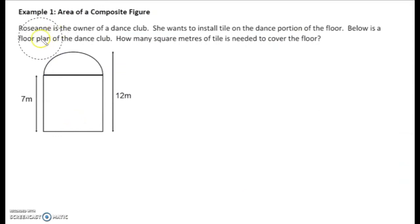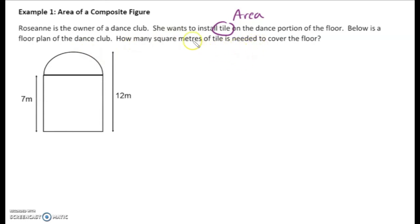Example one: area of a composite figure. Roseanne is the owner of a dance club. She wants to install tile — as soon as we see tile, we know we're covering the area of the floor. The floor plan shows the dance portion. How many square meters of tile is needed to cover the floor? The entire length is 12 and the width is 7. What we have is a semicircle and a rectangle.